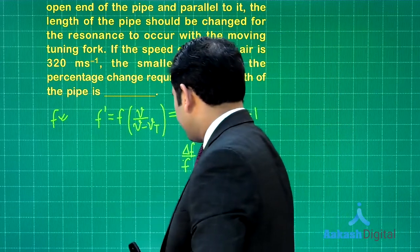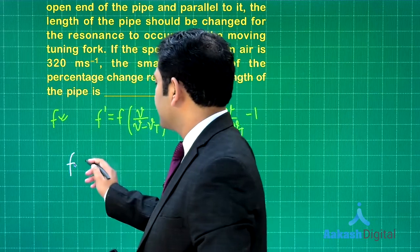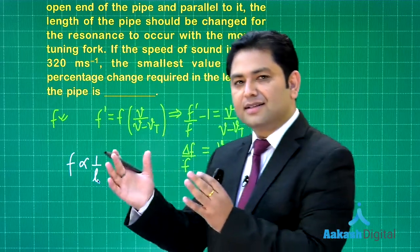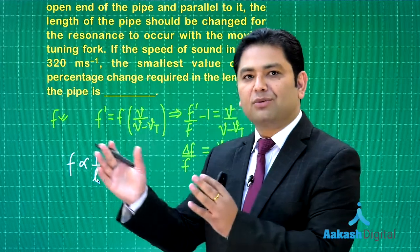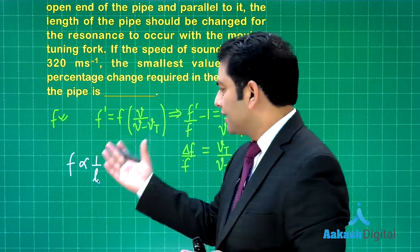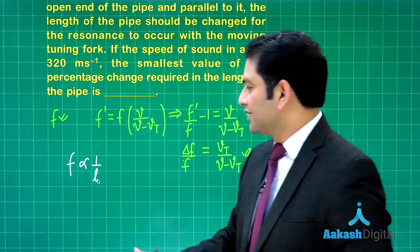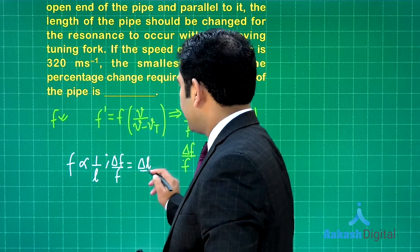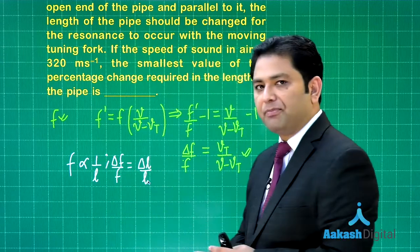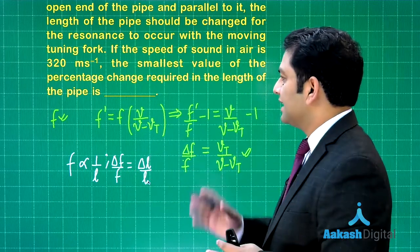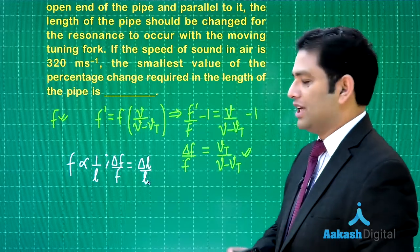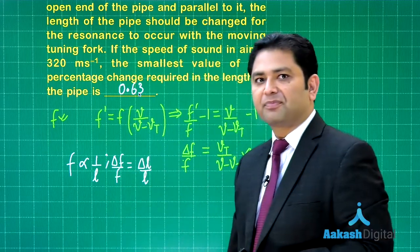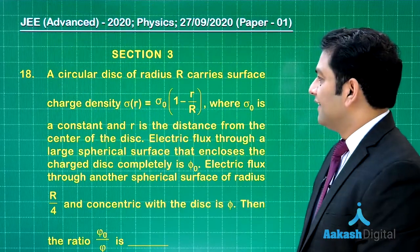How can we relate it with the percentage change in length? Let's see the expression for the tuning fork. f is inversely proportional to the length because when there is resonance, the frequency of the tuning fork equals frequency of the pipe. We can write that Δf/f equals in magnitude Δl/l. I'll put the value of Δf/f here; that will give me Δl/l. For percentage change, multiply by 100, and that will be 0.63.